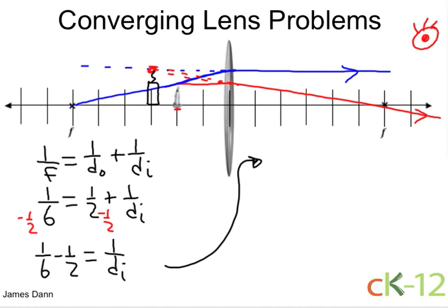Well, we need to find a common denominator. That will be 6. So we have 1 sixth minus 3 sixth equals 1 over the image distance. And here we have negative 2 sixth, which is just negative 1 third.